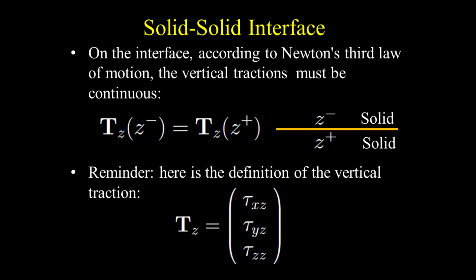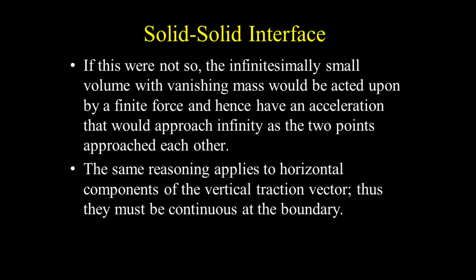On the interface, according to Newton's third law of motion, the vertical tractions must be continuous across the interface. The vertical traction is composed of three stresses: tau xz, tau yz, and tau zz. If this were not so, the infinitesimally small volume with vanishing mass would be acted upon by a finite force, and hence have an acceleration approaching infinity. The same reasoning applies to horizontal components of the vertical traction vector — thus they must be continuous at the boundary.